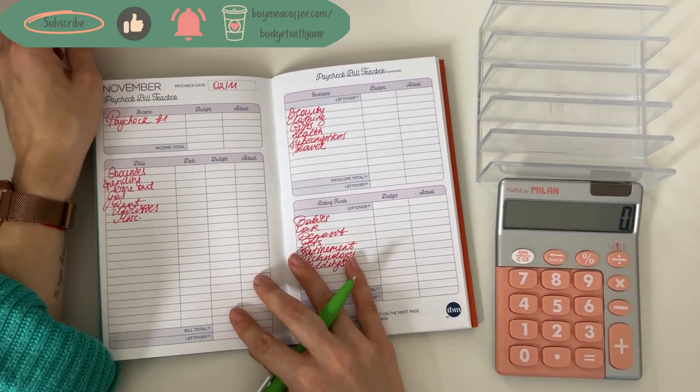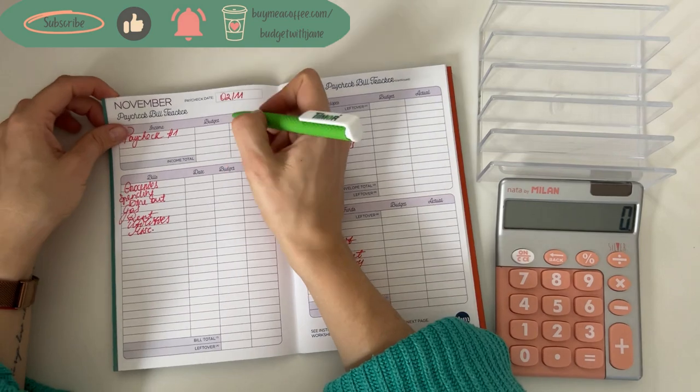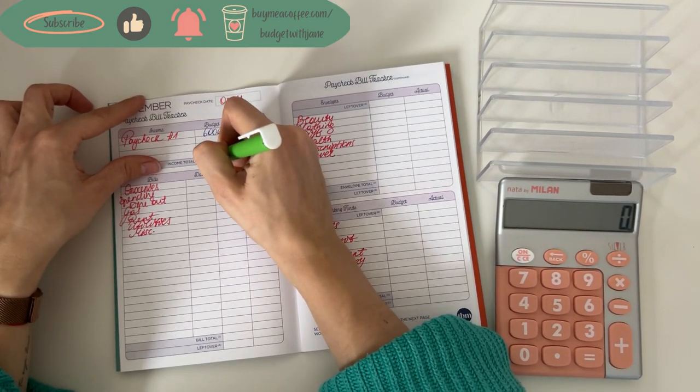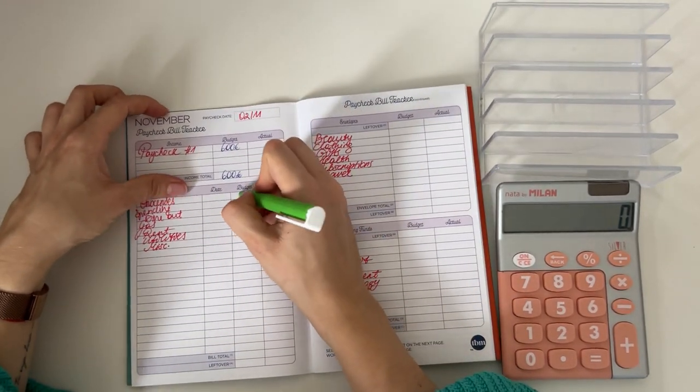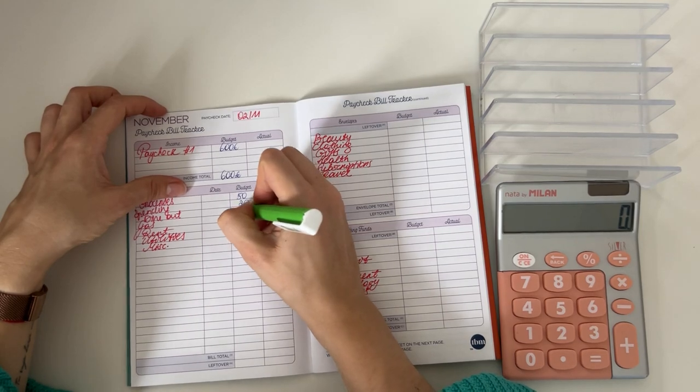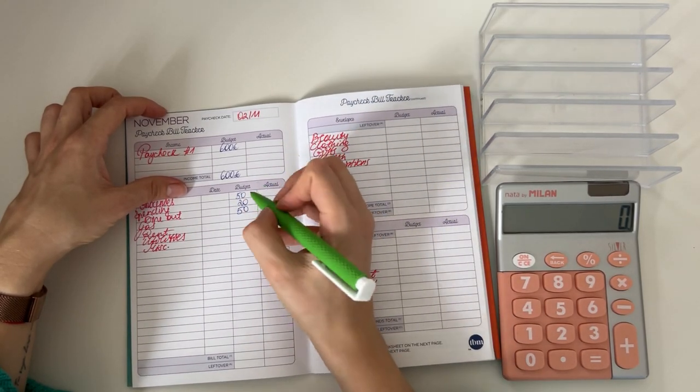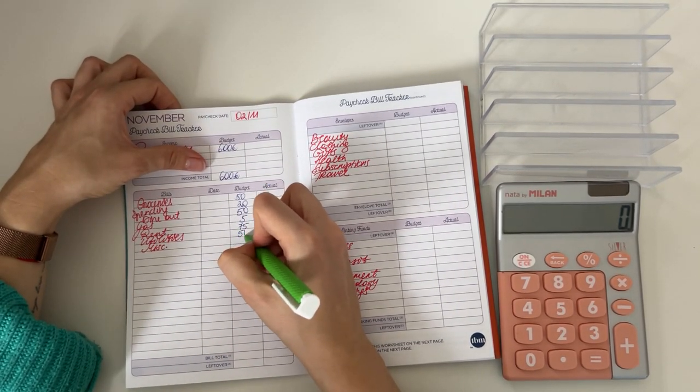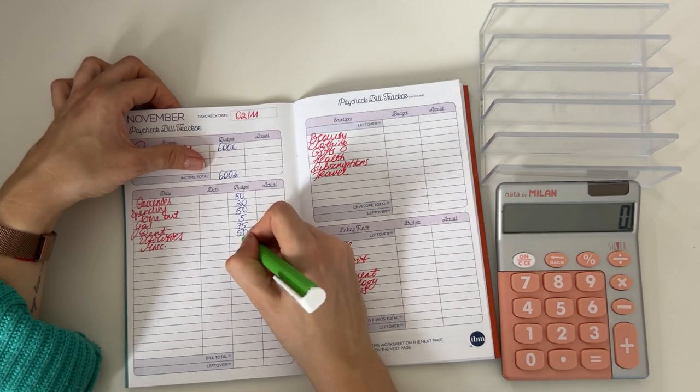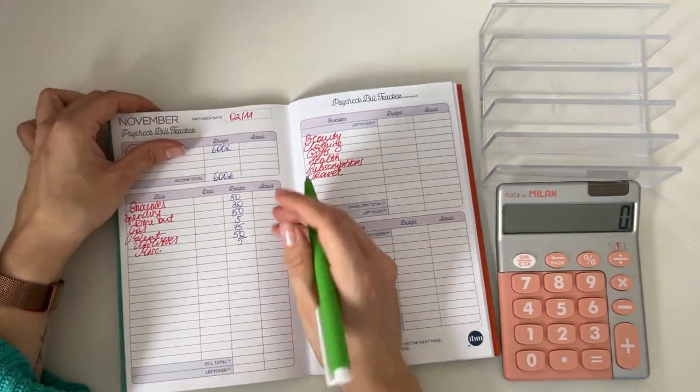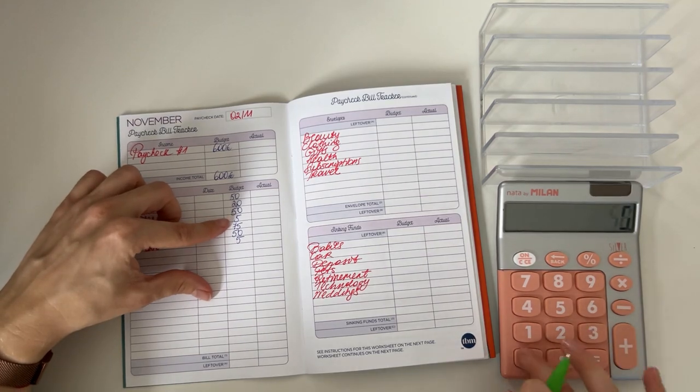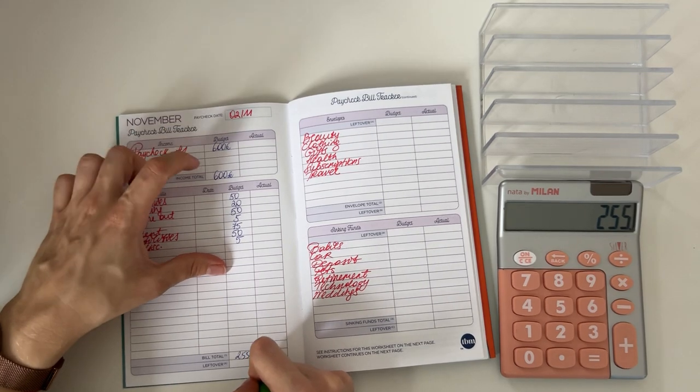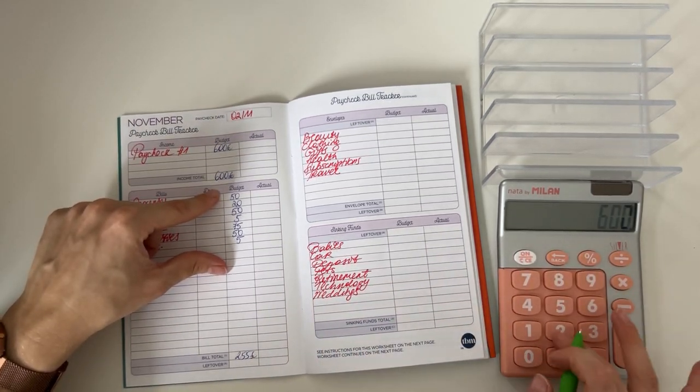To go through the paycheck for the second of November, paycheck number first, and we are working with 600 euros for this week. So as usual we're gonna put 50 in groceries, 20 in spending, and 50 in dine out. I'm gonna put 5 into gas, rent is going to get 75, 50 is going into utilities, and miscellaneous is getting a 5.